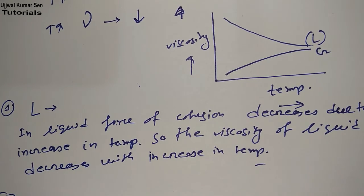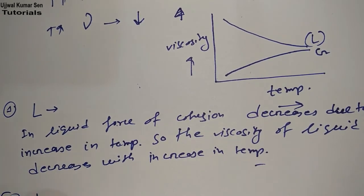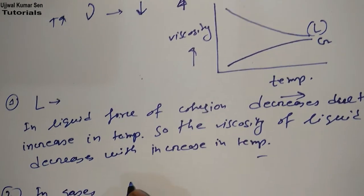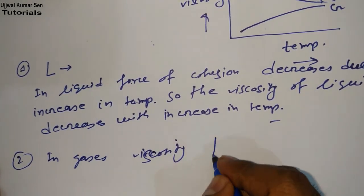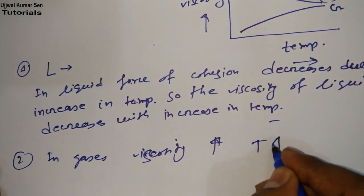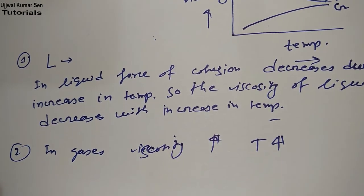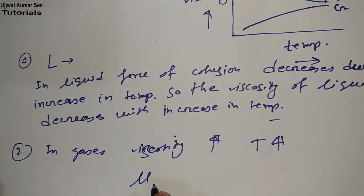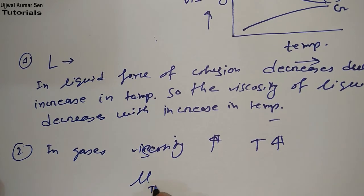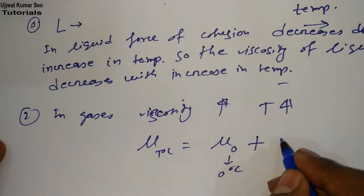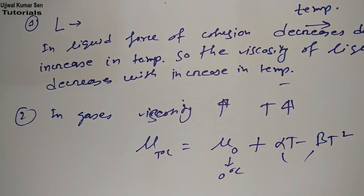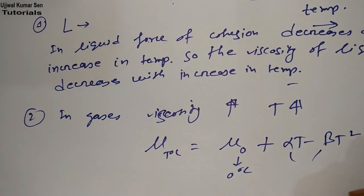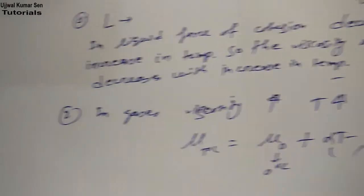Second point: in case of gases, viscosity will increase when temperature is increased. Here we have an important equation: viscosity at t degrees centigrade equals viscosity at 0 degrees centigrade, plus alpha·t minus beta·t². Here alpha and beta are constants. This equation is important — you should remember it.